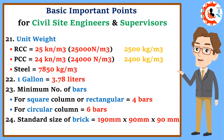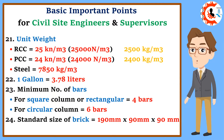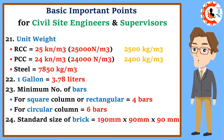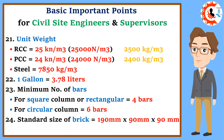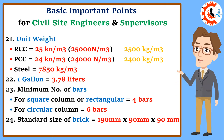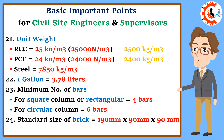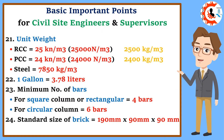22. One gallon equals 3.78 liters. 23. Minimum number of bars: for square or rectangular column equals 4 bars; for circular column equals 6 bars. 24. Standard size of brick equals 190 mm × 90 mm × 90 mm.